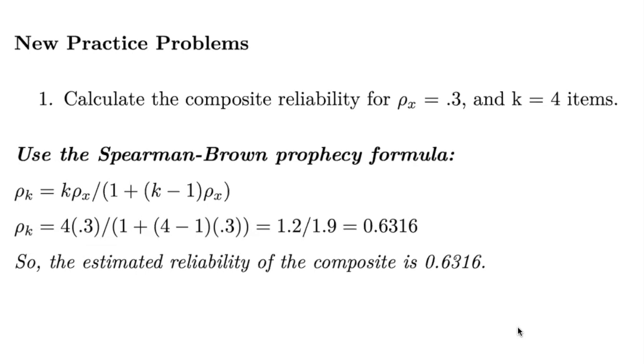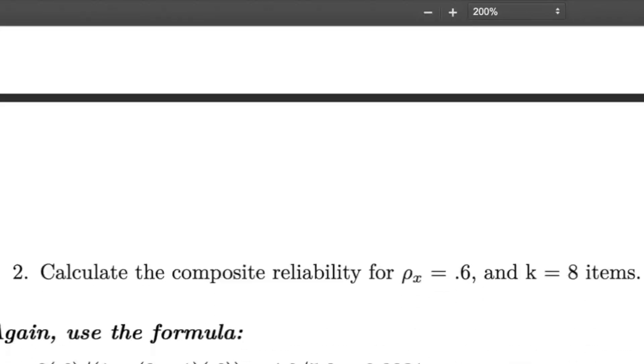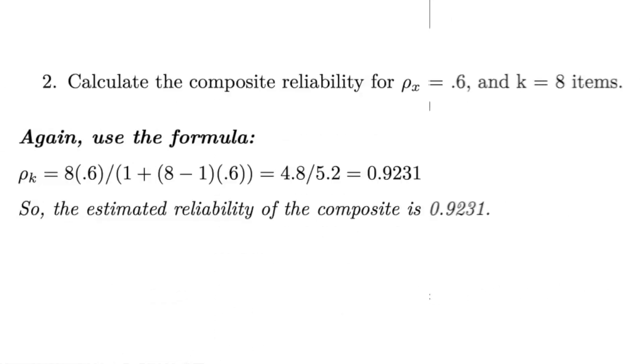Let's calculate the reliability for ρₓ equals 0.6 and k equals eight items. This gives us a composite reliability of around 0.9231. So despite each individual item having a reliability of 60%, by combining eight of them, we're able to achieve a composite reliability of over 92%. Again, the strength of the combined measures is what's most apparent here.